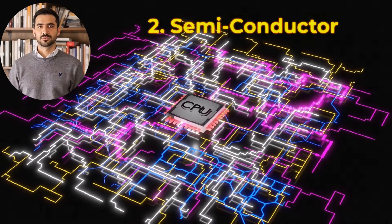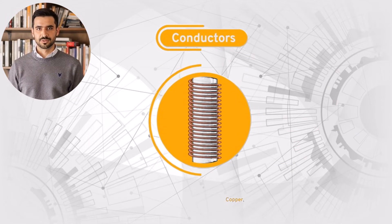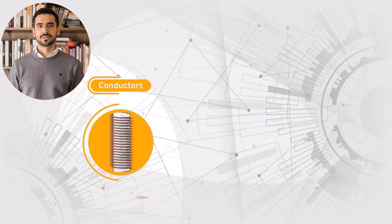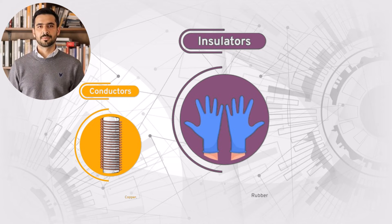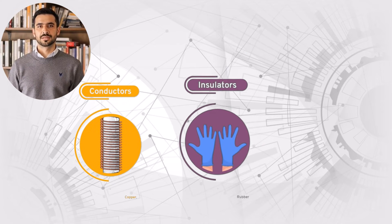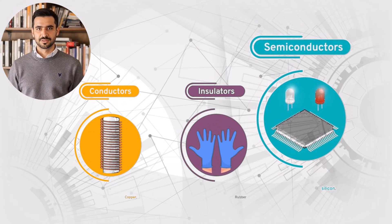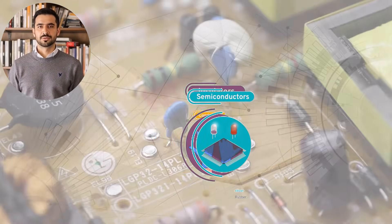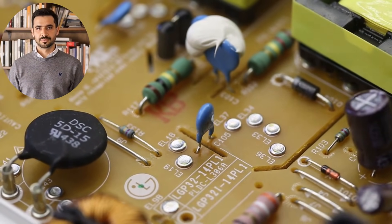So, what's the takeaway? Conductors like copper are the champions of free-flowing electrons. Insulators like plastic ensure safety by blocking electricity. And semiconductors like silicon are the game-changers that power modern technology. Together, they create the systems that define our world.